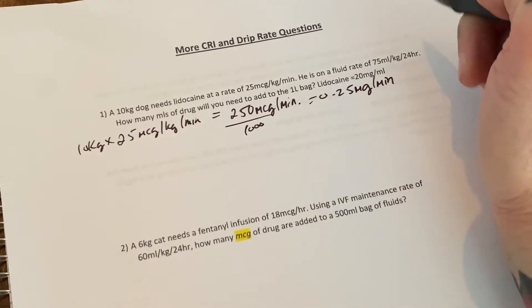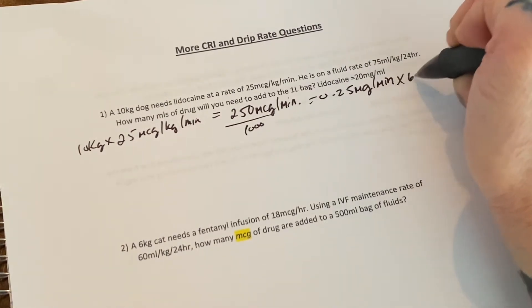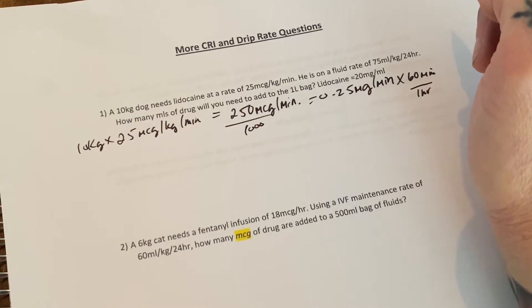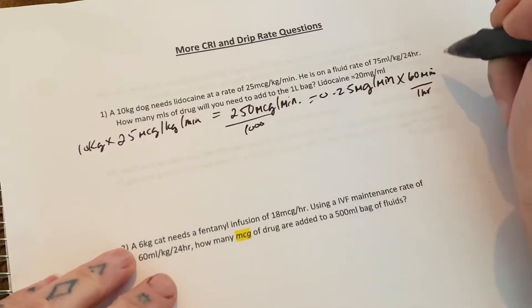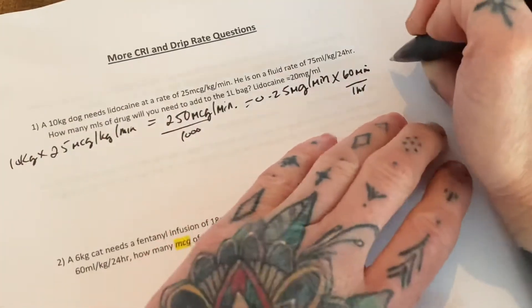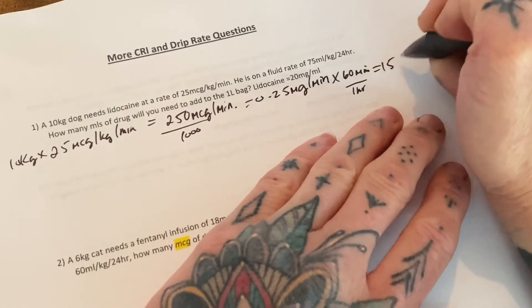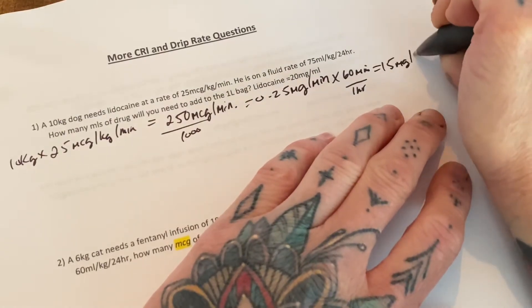There are 60 minutes in one hour. So we're now going to times this by 60 minutes in one hour. So times 60. Okay. So now we have 15 milligrams per hour.